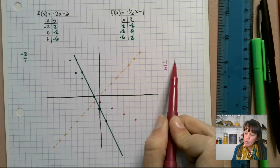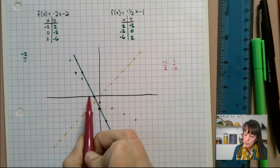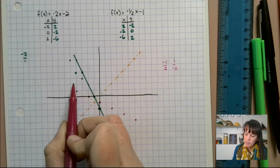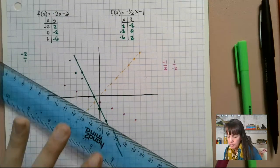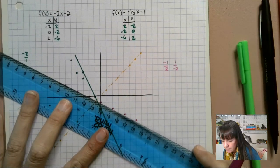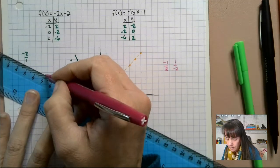I can also go up one and in the negative direction two. Make sure I count right this time. There we go. And so now we're going to use our straight edge here. And we're going to draw our line.